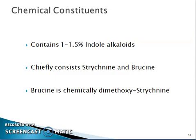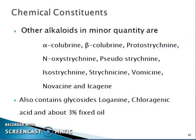The alkaloids chiefly consist of strychnine and brucine. Brucine is chemically dimethoxy-strychnine. Other alkaloids in minor quantity include alpha-colubrine, beta-colubrine, protostrychnine, N-oxystrychnine, pseudostrychnine, isostrychnine, strychniciine, icajine, novacine, and isatine. The drug also contains glycosides loganin, chlorogenic acid, and about 3% fixed oil.